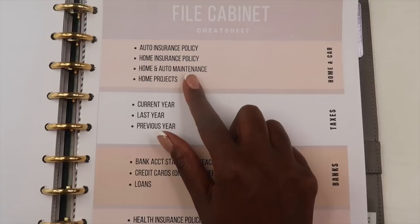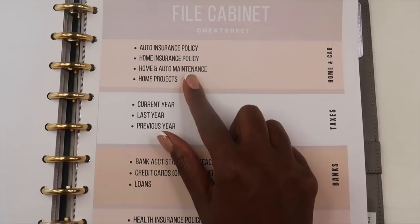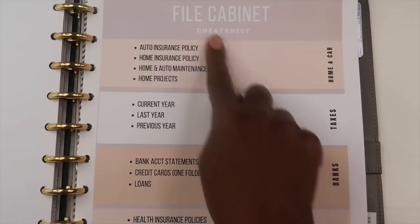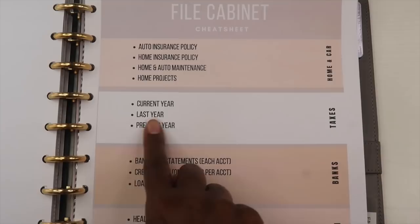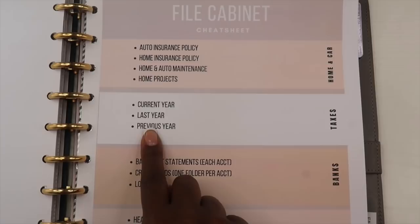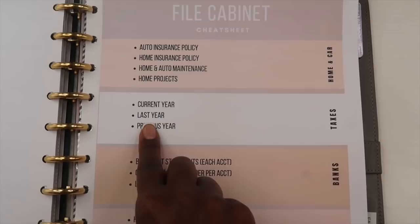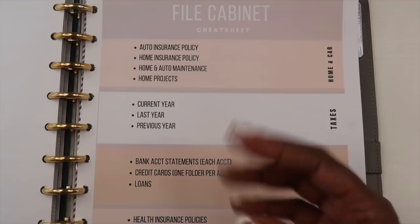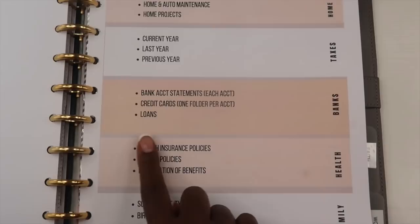The very next section is our taxes. I keep a printout of the current year, last year, and the previous year before that. I have electronic copies up to seven years on my computer, but I keep printed copies in my file cabinet of the three most recent years just in case I need to quickly glance at them. The next area is banks.